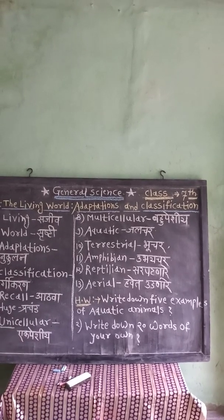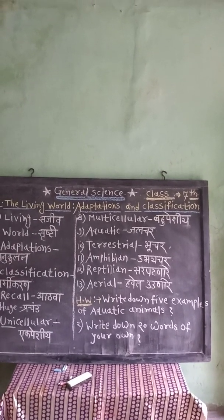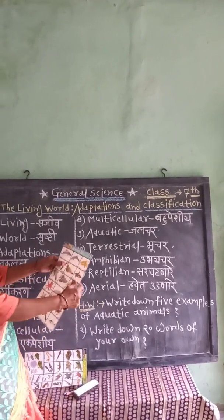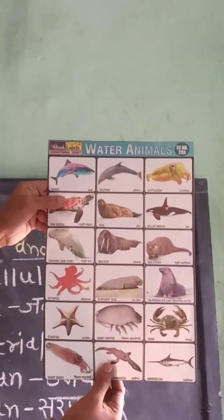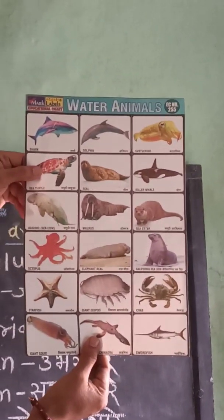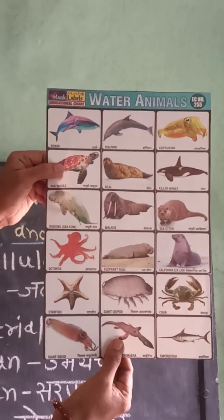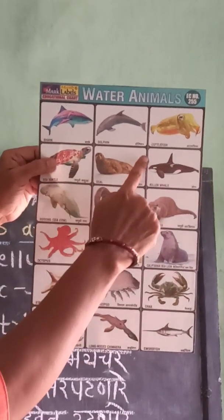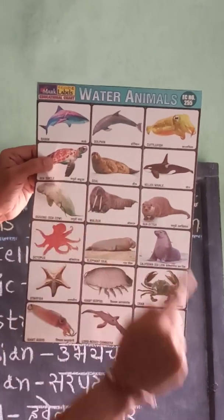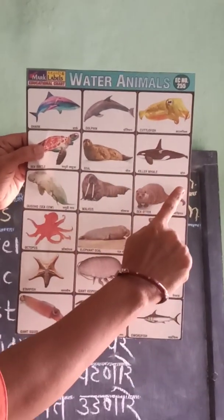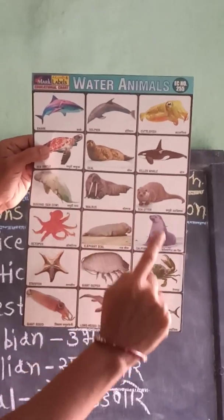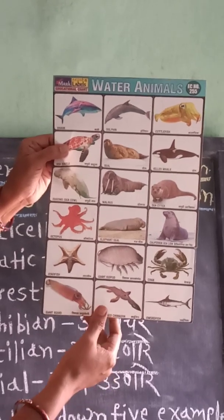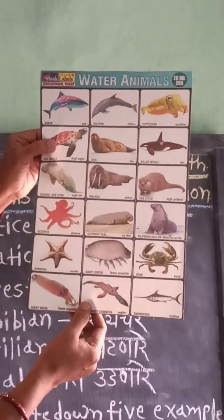Look at this chart of aquatic animals. All these are aquatic animals — animals that live in water: shark, dolphin, cuttlefish, sea turtle, seal, whale, sea cow, and walrus.